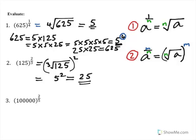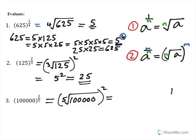The next one uses the same rule, rule number 2. n is 5, so it's the fifth root of 100,000, all raised to the power of 2. I'm hoping you'll spot there are five zeros there, so 100,000 is 10 to the power of 5. You're multiplying 10 by itself 5 times to get 100,000. So the fifth root would be 10, and then you've got to square it, which gives you 100. Did you manage that? I hope so.